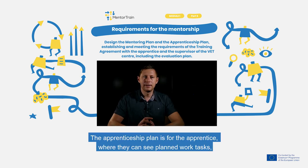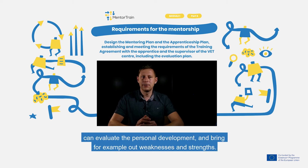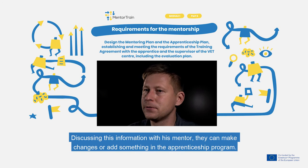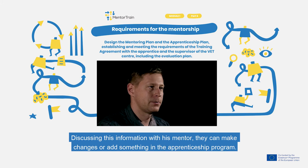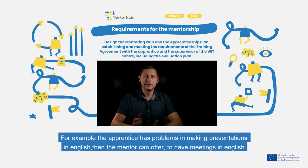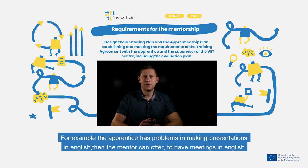The apprenticeship plan is for the apprentice, where they can see planned work tasks and evaluate their personal development — for example, identifying weaknesses and strengths. By discussing this information with the mentor, they can make changes or add something to the apprenticeship program. For example, when the apprentice has problems making presentations in English, then the mentor can offer to have meetings in English.